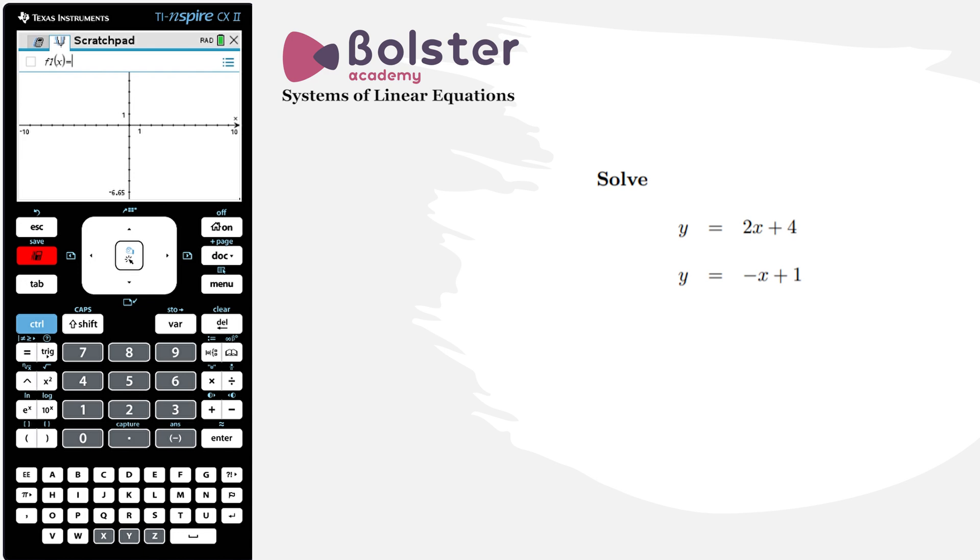We're just going to type in the equations that we have. We've got 2x plus 4, hit enter, and then I hit my tab button to bring it up again in order to put in my second equation: minus x plus 1. There you go, you have both lines graphed on the graphical display.